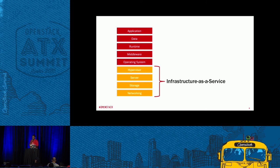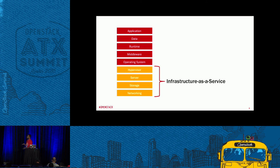Infrastructure as a service is basically a service model that allows the cloud consumer to provision computing resources and software — operating system and applications. The cloud consumer manages images, operating system, application, storage, networking, computing resources, vCPUs, and vRAM. Infrastructure as a service abstracts the bottom four layers for you, so you don't have to deal with networking, storage, server, and hypervisor stuff.